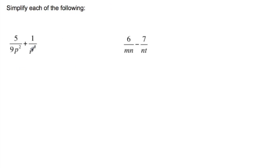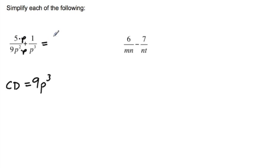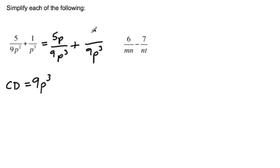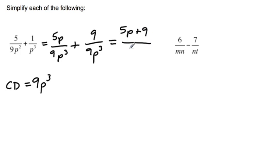What we are doing now is taking it a step further — dealing with algebraic fractions where we have variables in the denominator as well, but the rules are still the same. The common denominator between nine-p-squared and p-cubed is nine-p-cubed. Nine-p-squared goes into nine-p-cubed if I multiply it by p, so I multiply the numerator by p to get five-p over nine-p-cubed. For the second fraction, one over p-cubed, I multiply p-cubed by nine to get nine-p-cubed, so I multiply the numerator by nine. Adding the numerators together gives me five-p plus nine over nine-p-cubed.